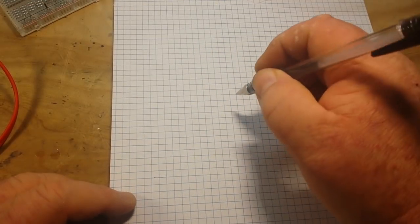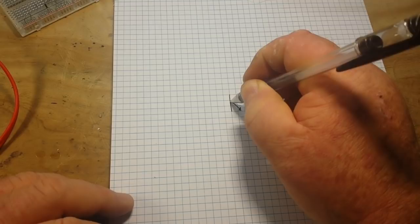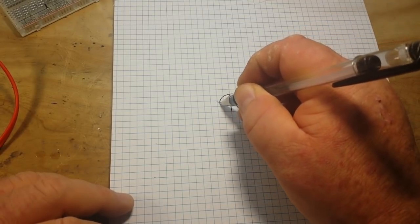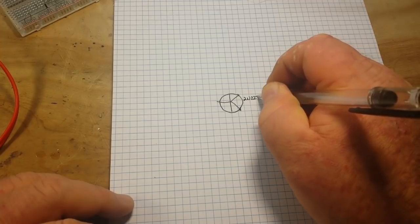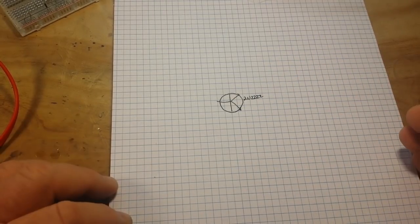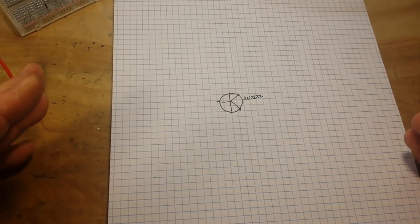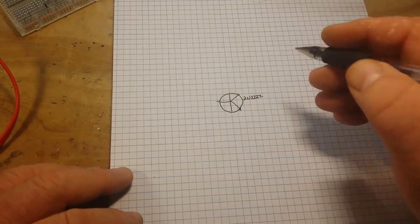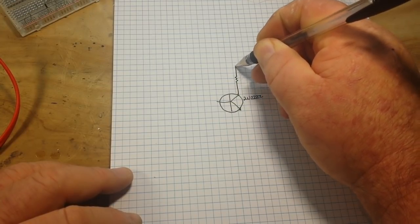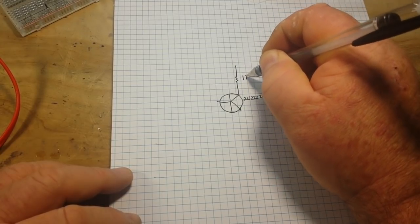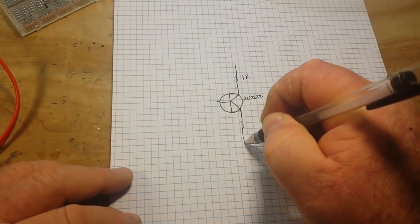So first let's go over the common emitter amplifier. At the heart of it is an NPN transistor. For our purposes today we're going to use the 2N2222, a simple transistor that's everywhere and works well for small signal amplification. We're going to start from our collector through a collector resistor, in this case 1k, and our emitter is going to have the emitter resistor, in this case 220 ohms.